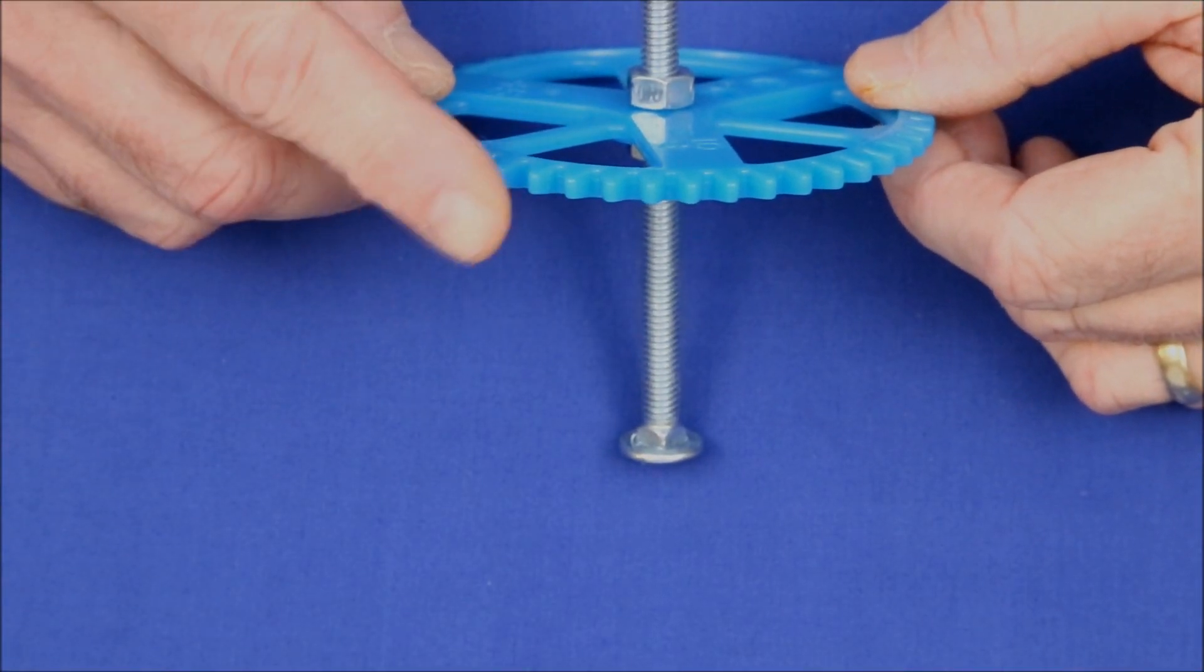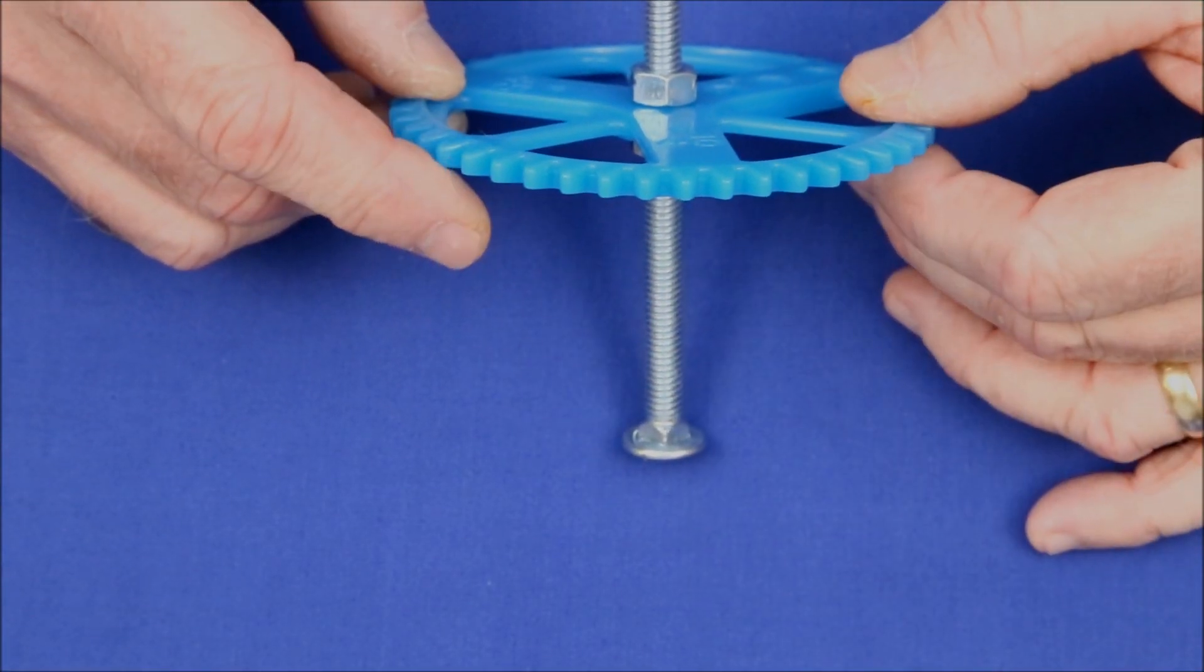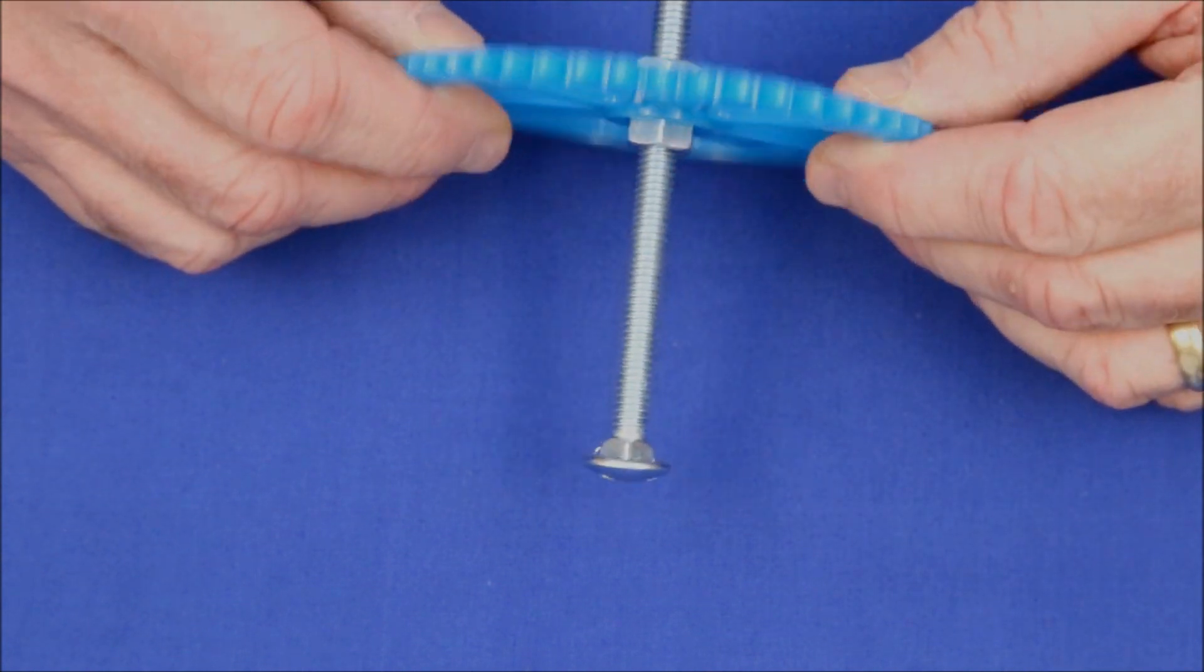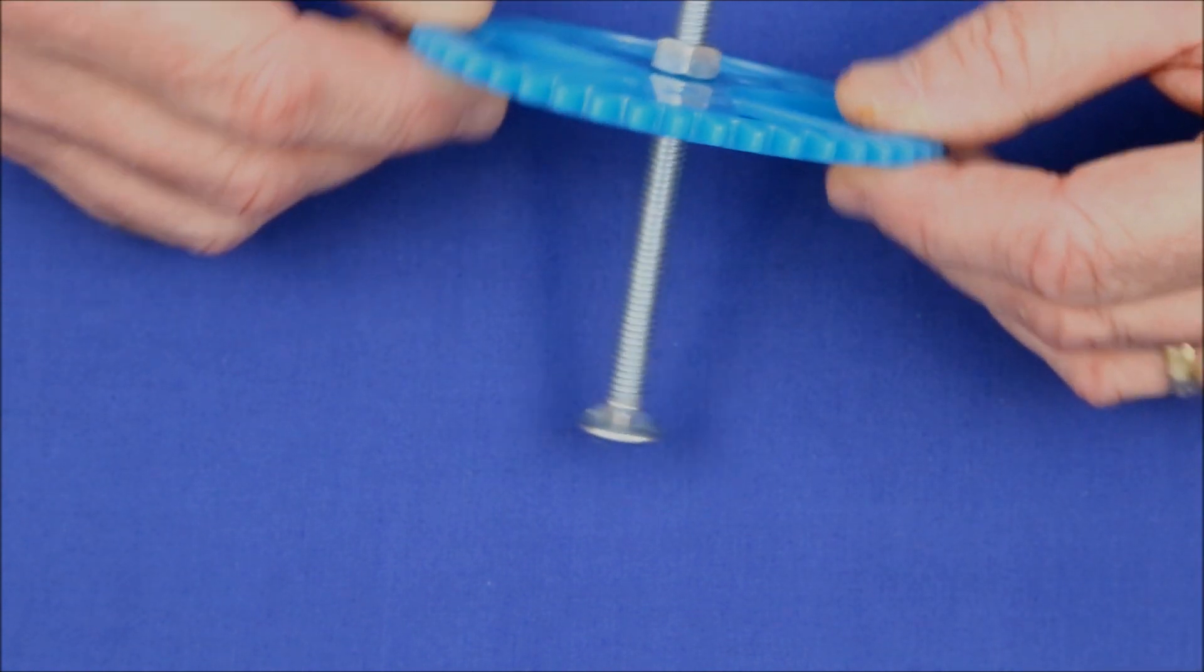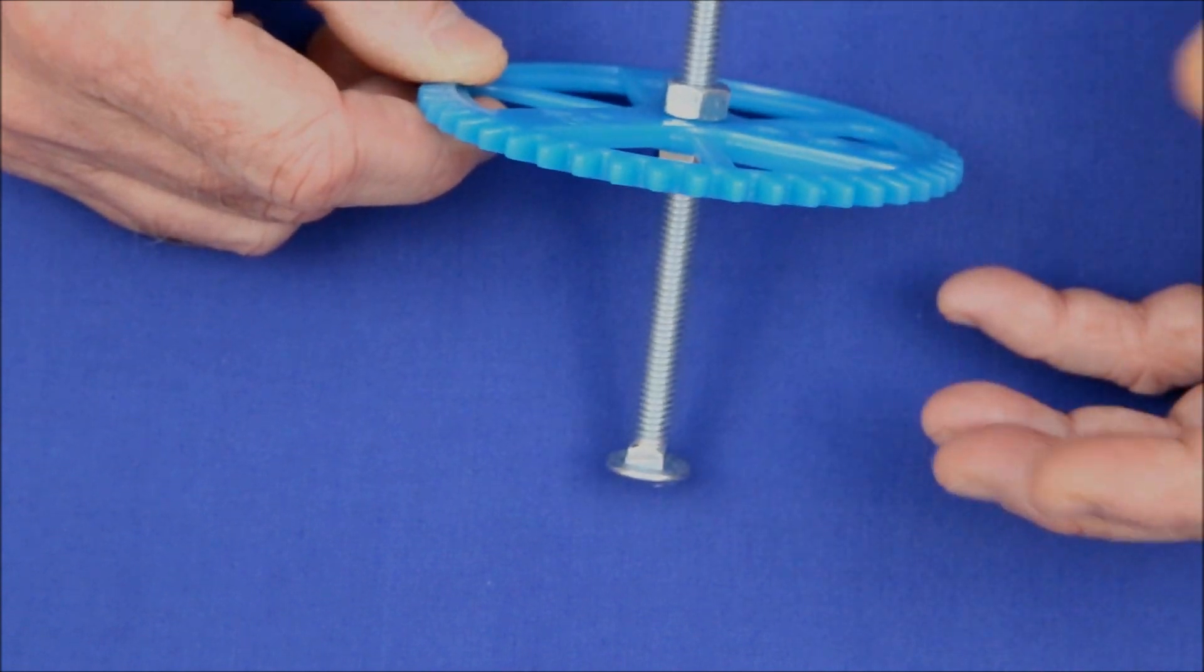I recently needed to attach a plastic gear to a shaft for a prototype drawing machine. The first one, like this, went on fine and worked great. The second one wobbled as it rotated and refused to work.